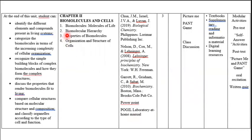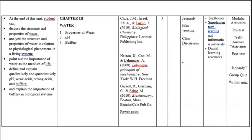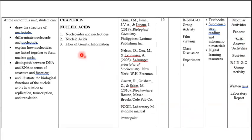For chapter two, biomolecules and cells, we will have the same structure — pre-test, activities, post-test — and the 'Picture Me' and 'Paint Me' game, so you have two games for this one. For chapter three, water, we will have another game and film viewing, along with pre-test, series of activities, and post-test. For chapter four, nucleic acids, same structure and a bingo group activity.